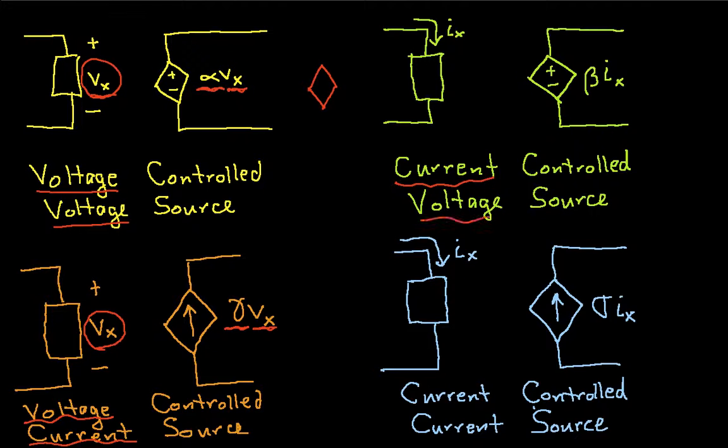And the other two types of sources are similar. You have a current-controlled voltage source. So the idea here is you monitor some current somewhere in the circuit. And the output of the source is a voltage that's proportional with this proportionality constant beta times the current. This turns out to be the model of a bipolar junction transistor. And so in fact, when you look at the spec sheet on a bipolar junction transistor, sometimes you'll actually see beta supplied there.